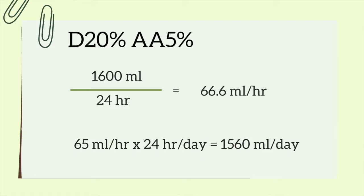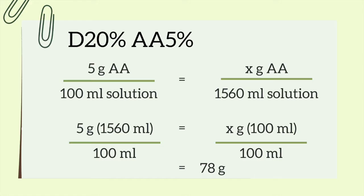So 1,560 milliliters is going to be how many milliliters are in your bag of dextrose and amino acid solution. You'll want to recalculate the protein again since you did change the rate and the amount of solution you were providing. To recalculate how much protein you'll get from 1,560 milliliters, set the equation up just like before, but instead of X being the milliliters, it'll be the grams of protein. So: 5 grams over 100 milliliters equals X grams over 1,560 milliliters. Cross multiply and divide both sides by 100, and you get 78 grams of protein.